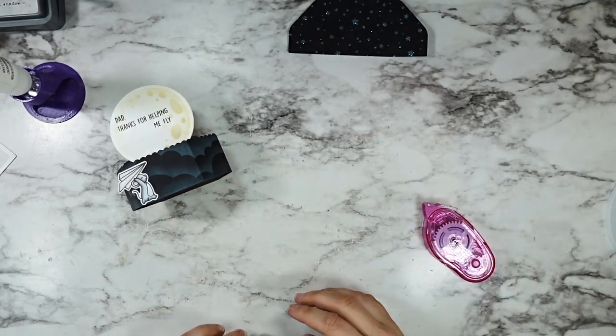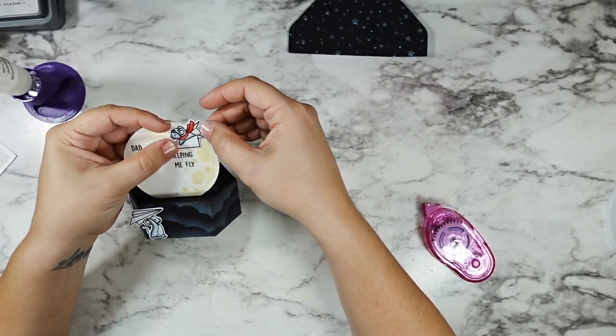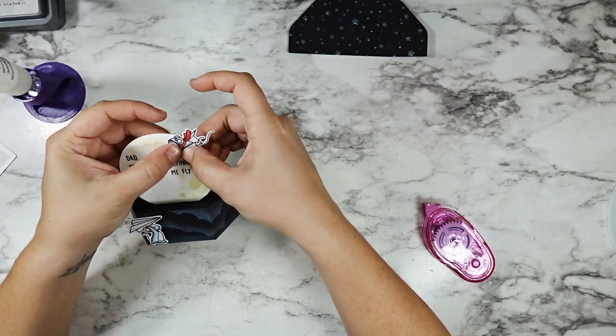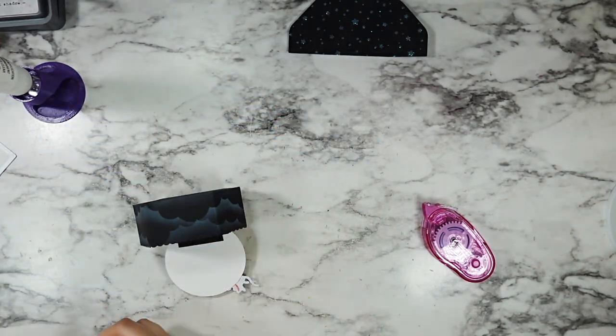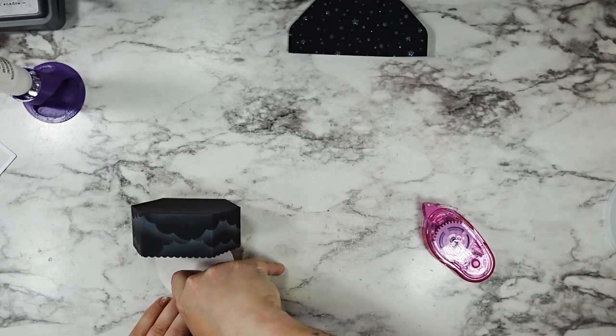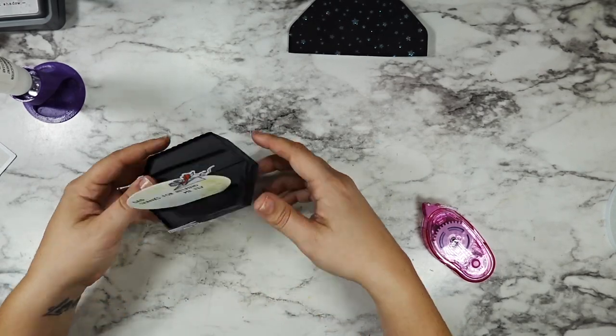I added some double-sided tape or tape runner to the back of my mouse and then just to make sure that everything was nice and secure, I added just a tiny touch of tape between the moon and the mouse just to reinforce that.